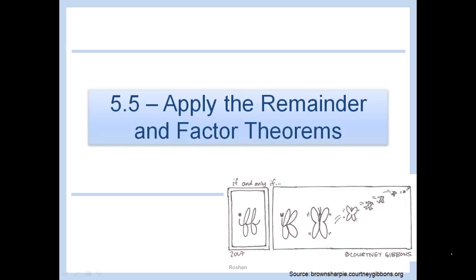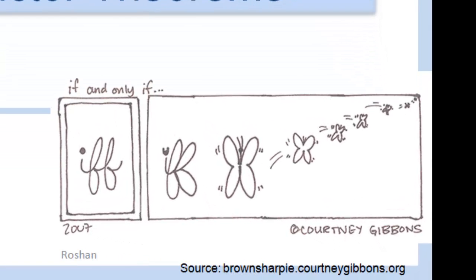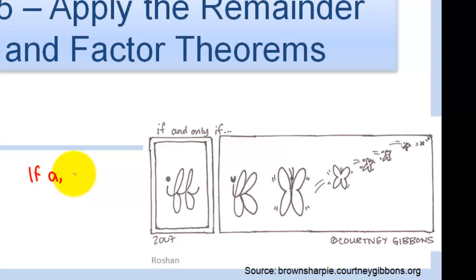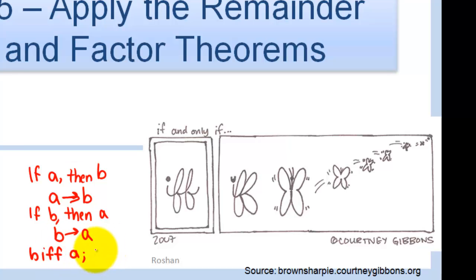Section 5.5: Apply the remainder and factor theorems. The if-and-only-if symbol — abbreviated IFF in math — means a statement holds true both ways. If we say 'if A then B,' that relationship only holds one way. But 'B if and only if A' is bi-directional, meaning the relationship goes both ways.